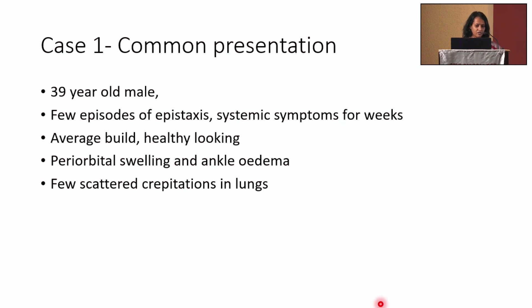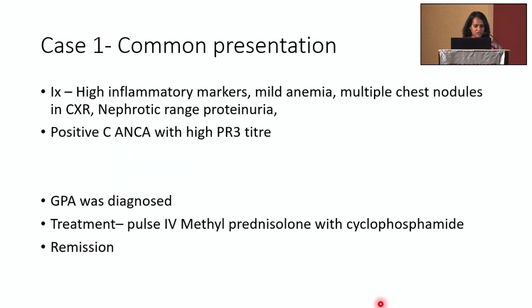On examination, he was averagely built and healthy-looking, had periorbital swelling at the time I examined, pitting ankle edema, and a few scattered crepitations in the lung. On investigation, he had very high inflammatory markers including CRP of more than 200, mild anemia, chest X-ray showing multiple lung nodules, and nephritic range proteinuria. This renal-pulmonary disease presenting with epistaxis is a classical picture.